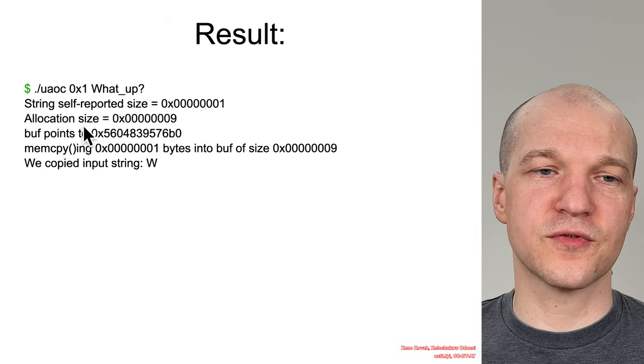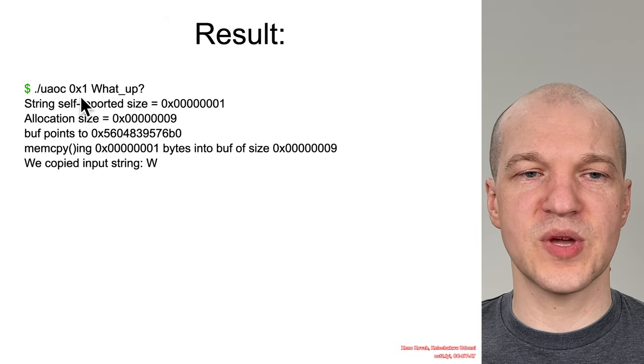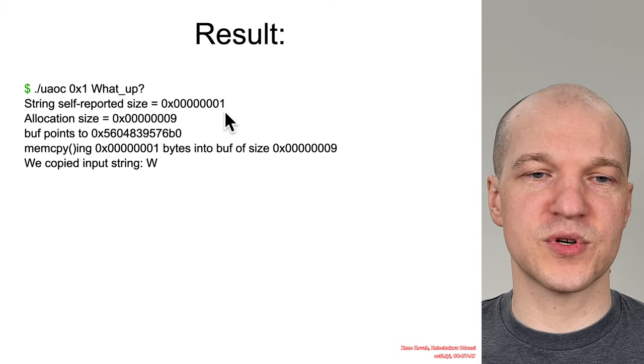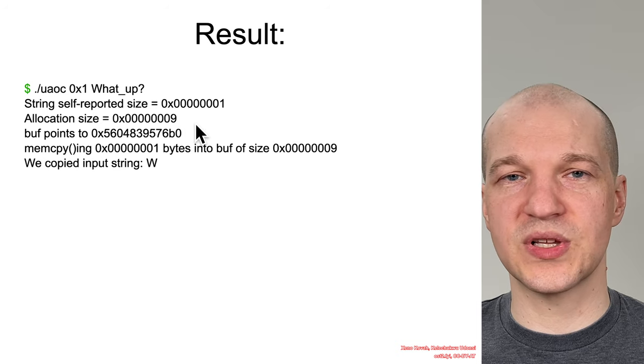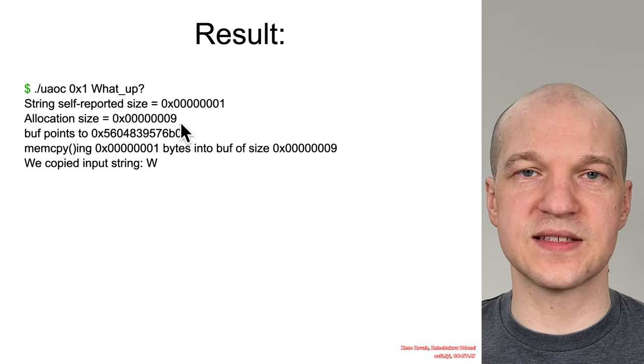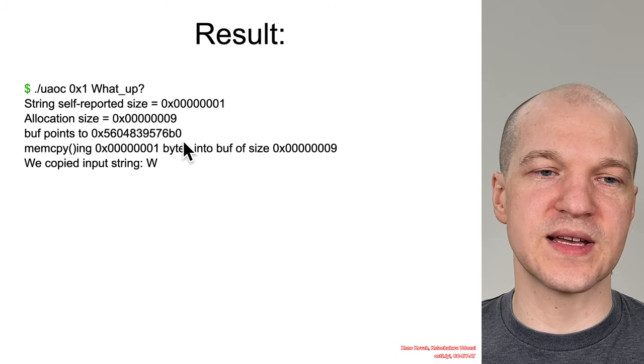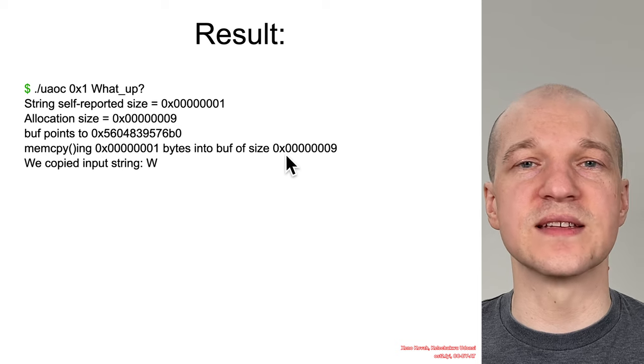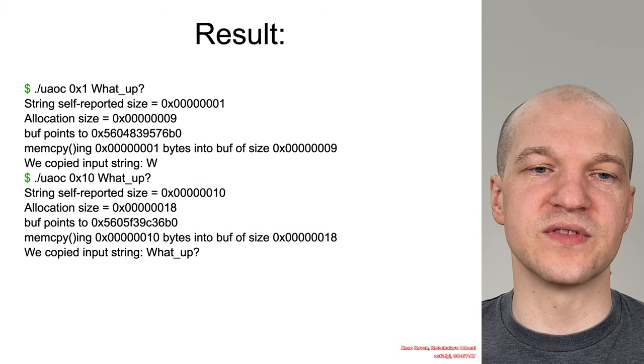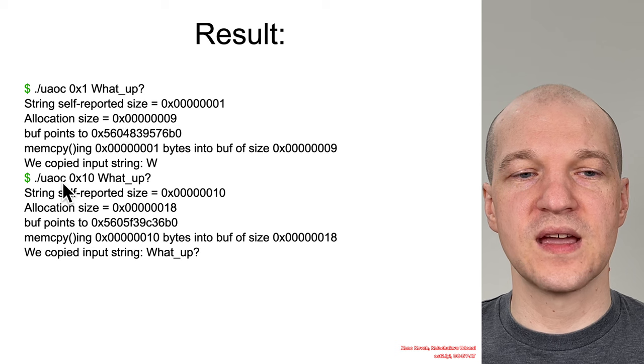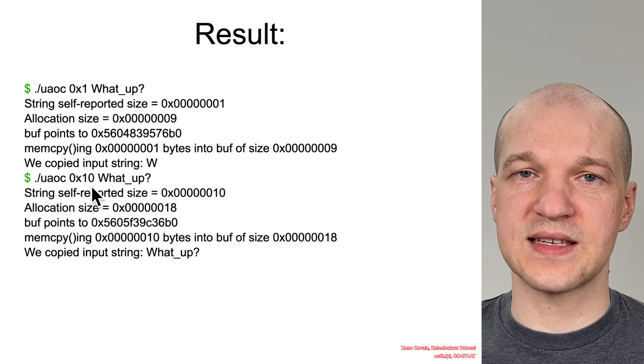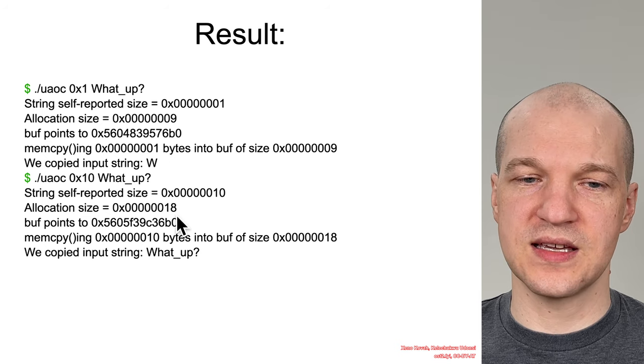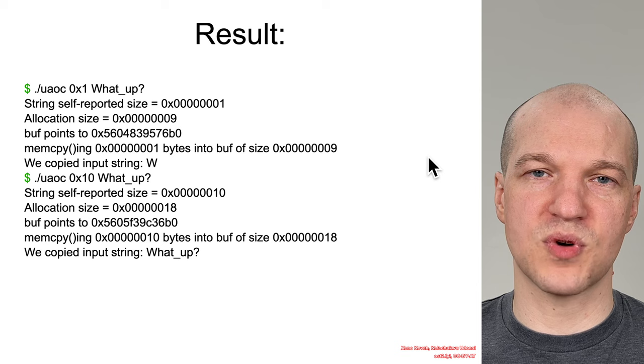Under-allocation via integer overflow and over-copy, and this just becomes a typical heap overflow. So if we run that, we could do, for instance, under-allocation over-copy. If we say 1, saying we want to have a size of 1, we're going to copy that. Self-report a size of 1. Allocation is 1 plus the header size, which is 8, so this is 9. Buffer points wherever it points on the heap. It's mem-copying 1 byte into a buffer of size 9. Great. No problem. And there's the copied string, 1 byte of W from the what-up. Then here, what if we say it is hex 10, 16 bytes? So it's going to allocate a total size of 18, and copying 10 bytes into 18? Sure. No problem.